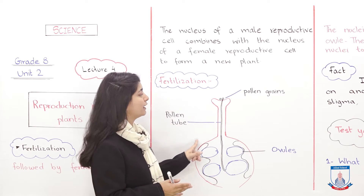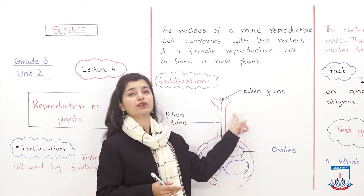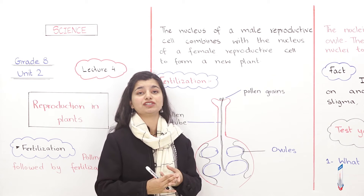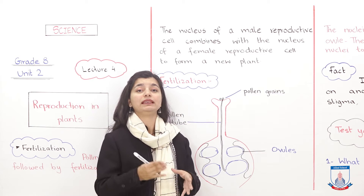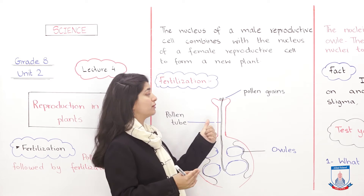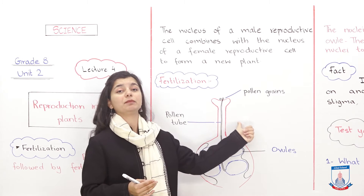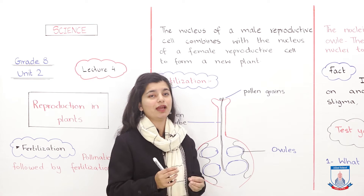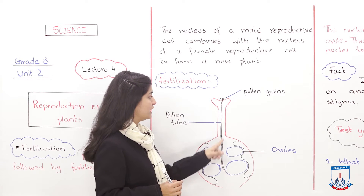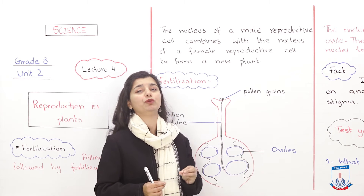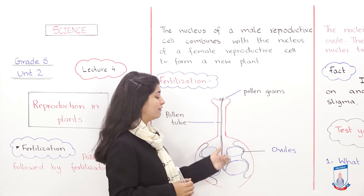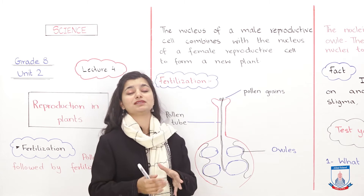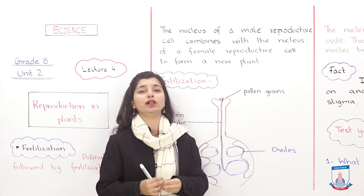Let's take another look at it. The pollen grain lands on the stigma — this can happen through wind pollination or insect pollination. When it comes to the stigma, it starts growing a pollen tube, which travels down to the ovule and fuses with it. This is the whole process of fertilization — it's not hard at all.